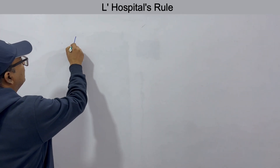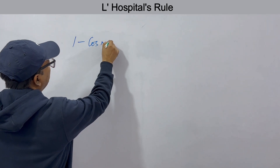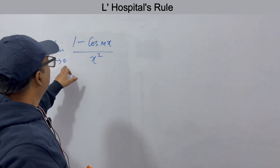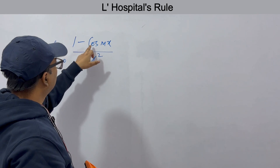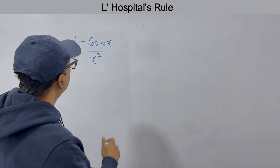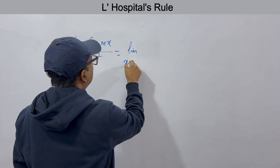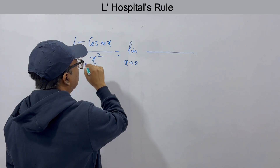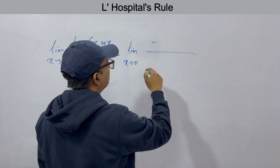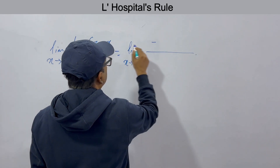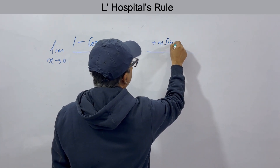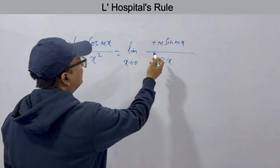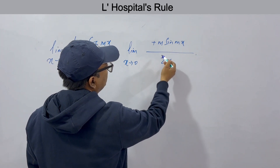The next function is (1 − cos(mx)) / x². Taking the limit as x→0: when you put 0, cos(0) = 1, so 1 − 1 = 0 and the denominator is also 0. So this is in 0 by 0 form. Let us take the first derivative: limit x→0 of d/dx(1 − cos(mx)) over d/dx(x²). The derivative of −cos(mx) gives m·sin(mx), so we get m·sin(mx) by 2x. When you put 0, this is again 0 by 0 form.